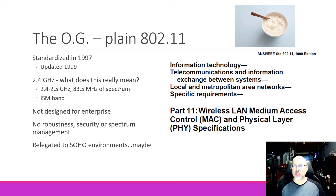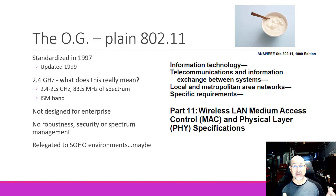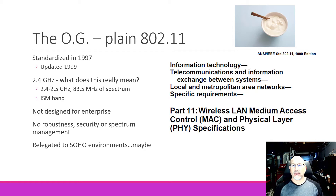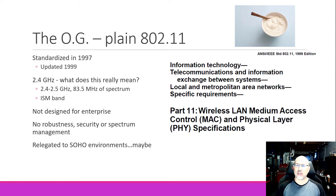Now let's talk about the OG — plain 802.11. It's kind of funny to think about this, but it's only been around for about 25 years. You could argue it was 5 to 8 years before there was any real adoption, so maybe 2005 somewhere in there. The original standard dates from 1997 and was published in 1999. On the right-hand side of the slide you can see the official title: 'Information Technology Telecommunications and Information Exchange Between Systems, Part 11 — Wireless LAN Medium Access Control and Physical Layer Specifications.' That says a lot, and we'll talk more about that in a little bit.